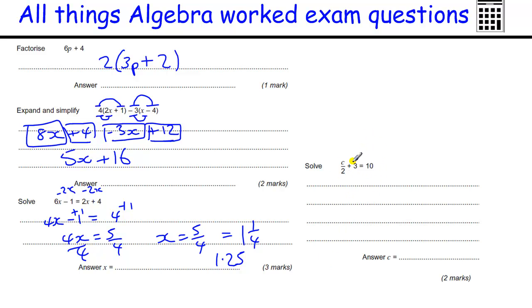Okay, now one with a fraction in it, so we take away the 3 from both sides, and we get C over 2 equals 7, and then we times by the 2. The key to solving equations is always to do the opposite, so if we divide it by 2 here, we times by 2 to get rid of it. And that gives us C equals 14.